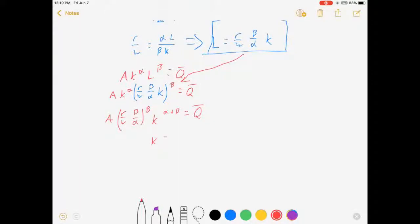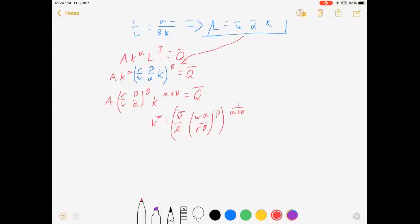From here, I can just solve for K. Let's see, K is going to equal Q bar over A times W alpha over R beta to the beta, and all of that to the 1 over alpha plus beta. And that, my friends, is the optimal level of K that will minimize costs at whatever Q bar we set.